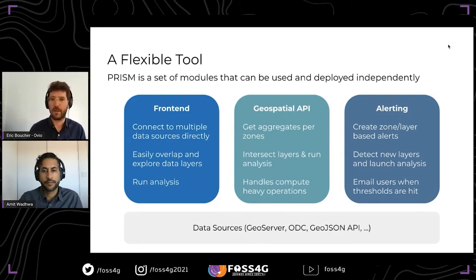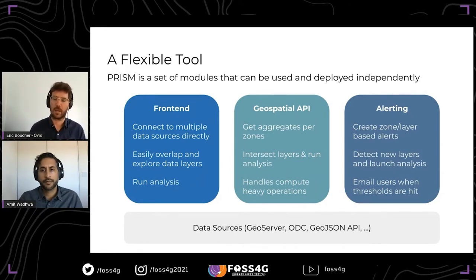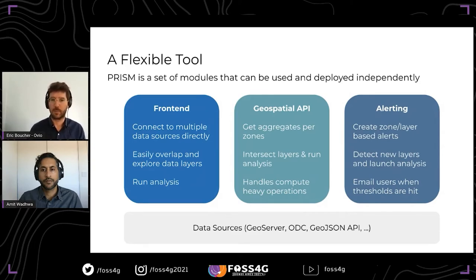We're also building an alerting system to accelerate the proactivity we have with this type of alert. Anytime a new data source comes in with new information, it can be analyzed, and based on different thresholds and triggers that users can set, it will warn them and tell them to come back to PRISM or another tool to analyze the situation further.